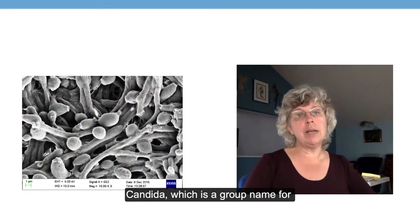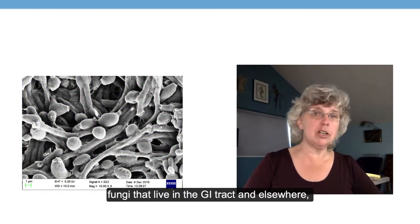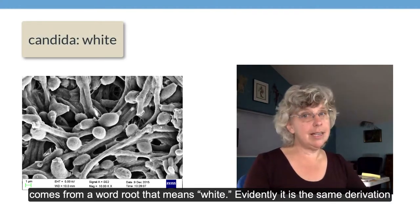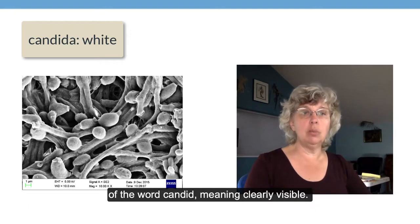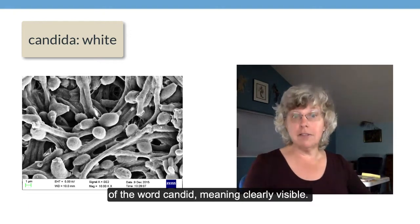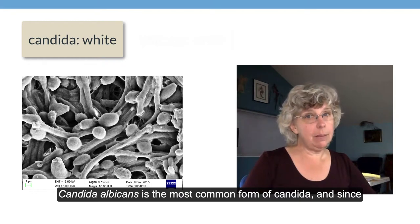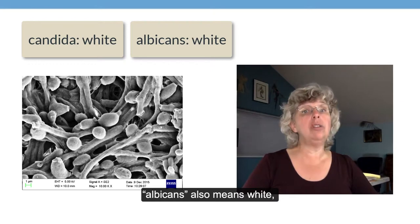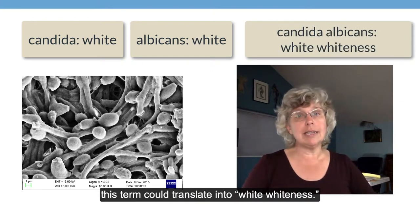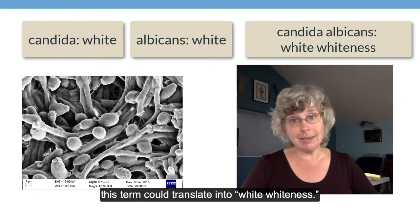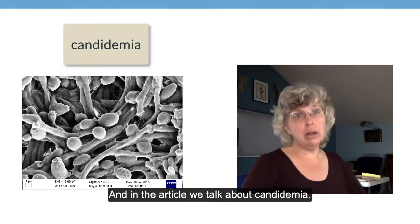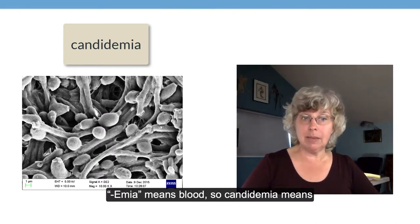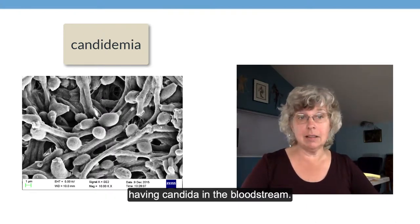Candida, which is a group name for fungi that live in the GI tract and elsewhere, comes from a word root that means white. Evidently it is the same derivation as the word candid, which could mean clearly visible. Candida albicans is the most common form of candida, and since albicans also means white, this term could translate into 'white whiteness.' And in the article, we talk about candidemia — emia means blood — so candidemia means having candida in the bloodstream.